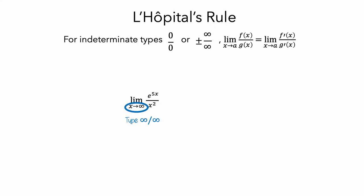Technically, that is not what is currently written for L'Hôpital's rule, but the rule will still work even if a is positive or negative infinity. So we'll apply L'Hôpital's rule, which says that we take the derivative of the numerator and denominator. For the numerator, we need to use the chain rule, and we'll get that the derivative is 5 times e to the 5x. For the denominator, the derivative is 2x.